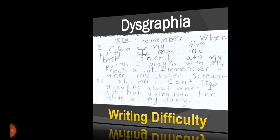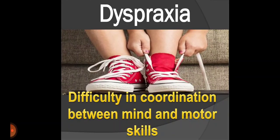Next, we have dyspraxia. Difficulty in coordination between mind and motor skills. Here, the child faces difficulty coordinating various motor functions, such as holding a pencil or any such work that requires hand and eye coordination, and it will be difficult for a dyspraxic child.